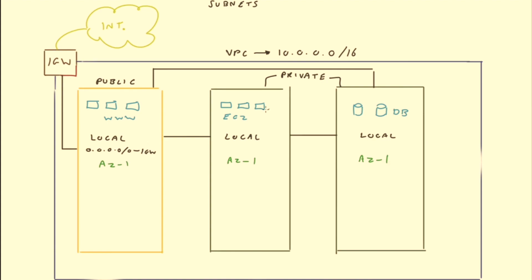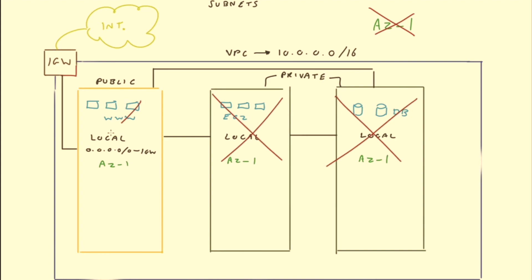We can deploy our infrastructure all within the same availability zone and our solution would operate fine. However, should AWS have an issue with that availability zone — for example a flood, fire, or natural disaster that took out availability zone 1 — all of our resources would also be taken down. It's not best practice to deploy all of your resources within the same availability zone because it doesn't offer high availability and resilience. The best thing to do is to add additional subnets to allow for resiliency.